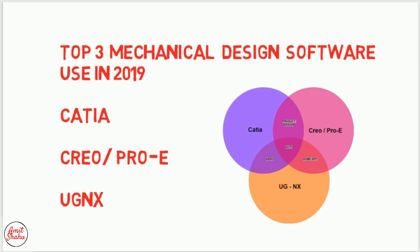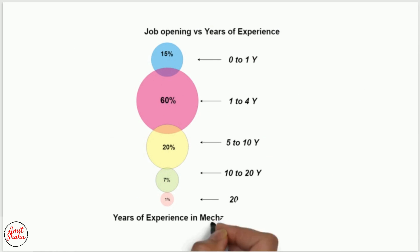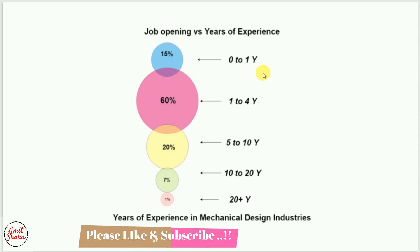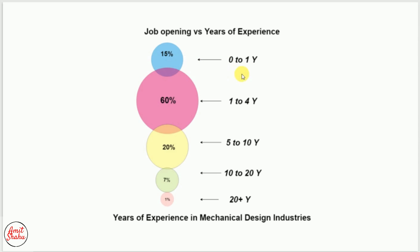In this chart, you can check job openings versus years of experience — how many jobs are currently available in the market. If your experience is 0 to 1 years, 15% of jobs are available for you. You need to advance yourself, learn at least two software, master domains like sheet metal, plastic, casting, GD&T, and basic calculations.